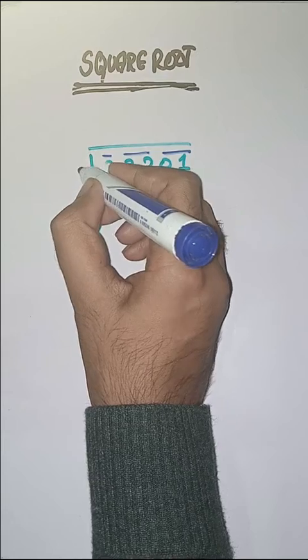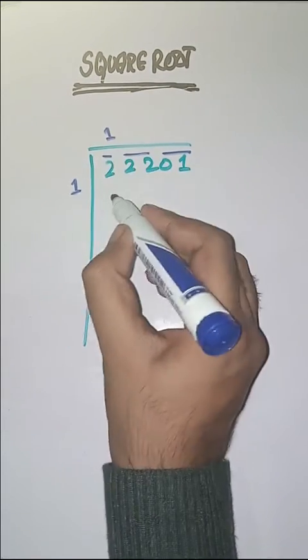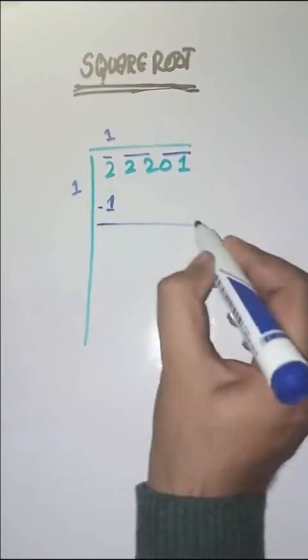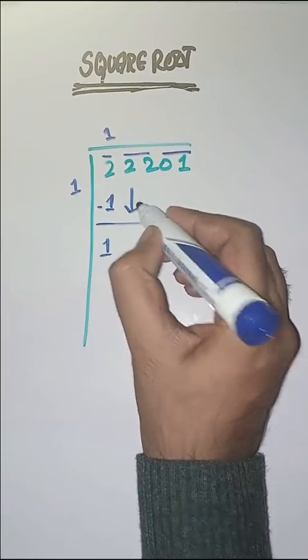So first we have to solve 2. We start with 1. 1 times 1 is 1. We subtract and get 1.